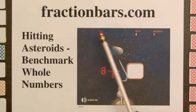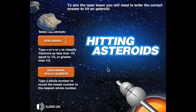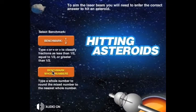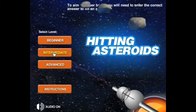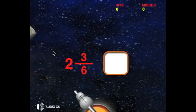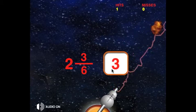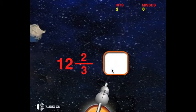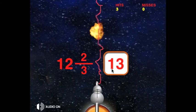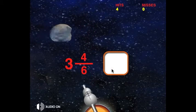There are two games on FractionBazz.com involving mixed numbers. The first game is Hitting Asteroids Benchmark Hole Numbers. In hitting Asteroids we will select Benchmark Hole Numbers and then the intermediate level. The player is given a mixed number to round to the nearest hole number and clicks the mouse to activate the laser. This player is very good.